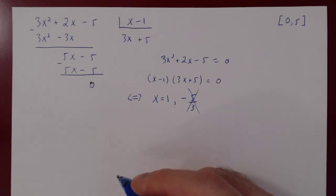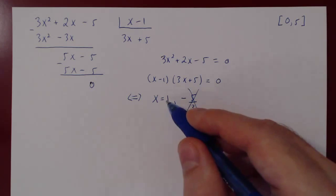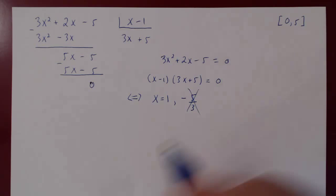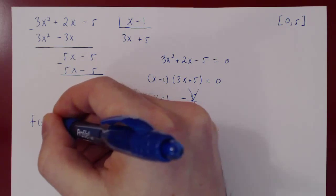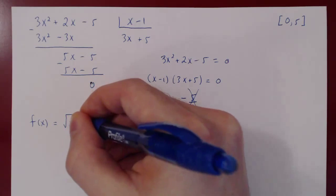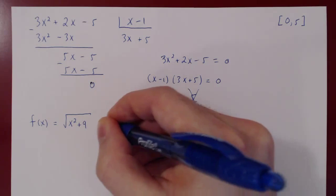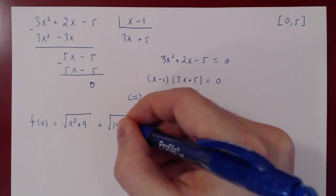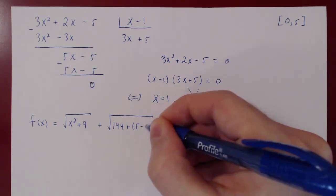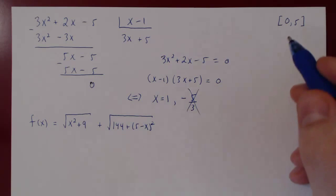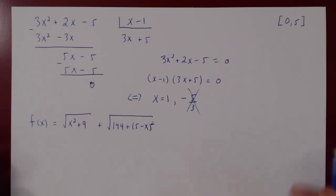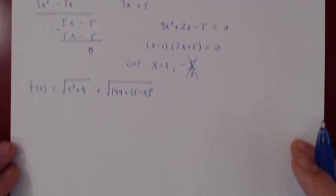We have our two endpoints, 0 and 5, and the single critical point inside the interval. We only have to evaluate the function at these three points. Let's recall our function f(x) = √(x² + 9) + √(144 + (5−x)²). We are going to evaluate our function at 0, 5, and 1 to find the minimum value of f.